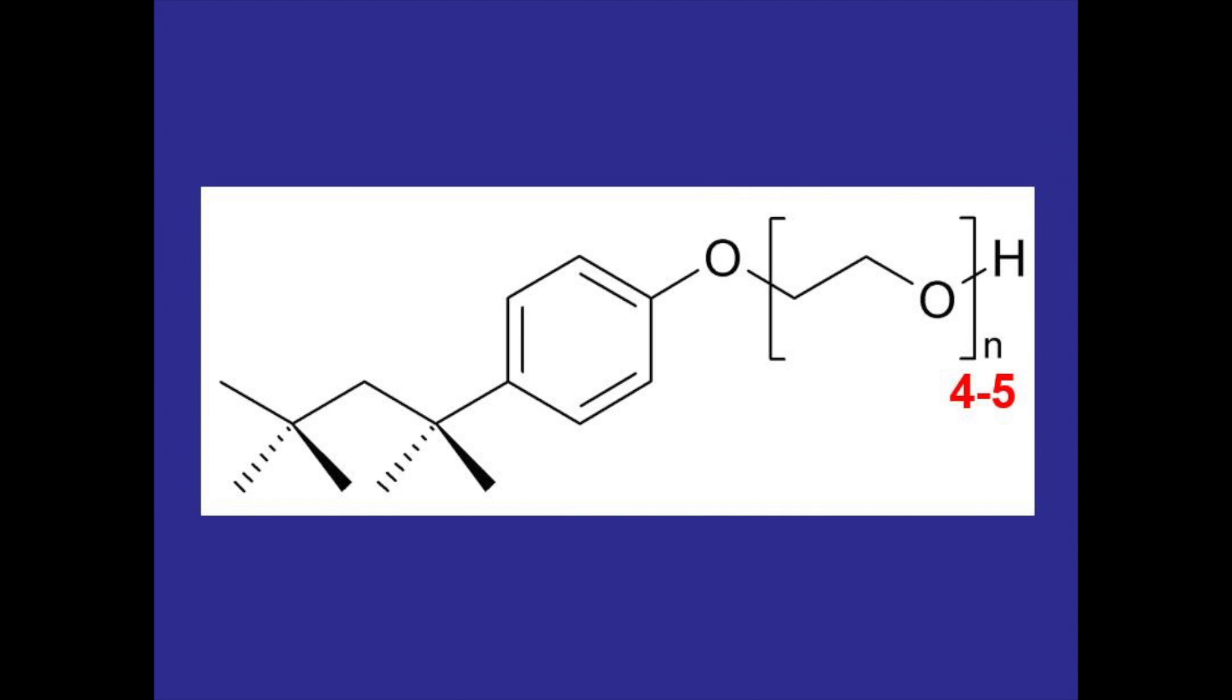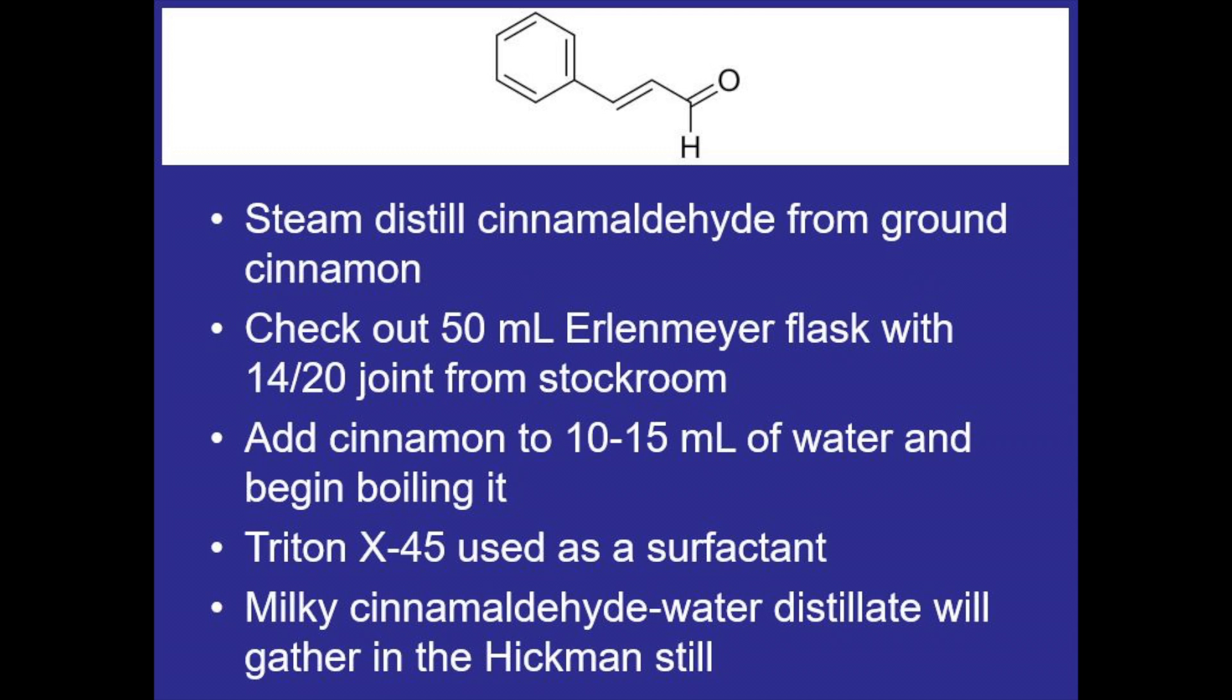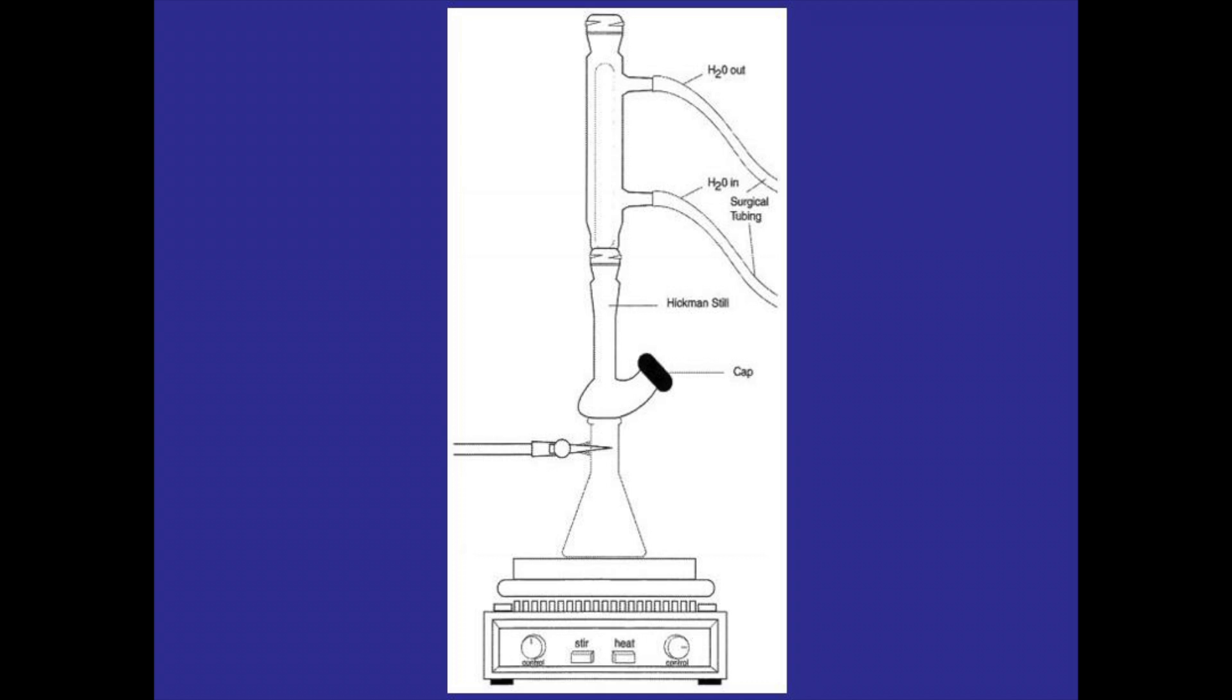As the mixture boils a milky cinnamaldehyde water distillate will start to gather in the Hickman still. The water and cinnamon will be boiling in the Erlenmeyer flask and the distillate will start to rise, condensing and gathering in the base of the Hickman still, and then we can remove it from there using a Pasteur pipette. We'll gather about five to seven milliliters of that distillate into a separate test tube.